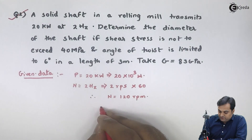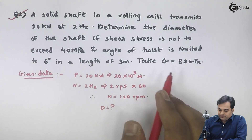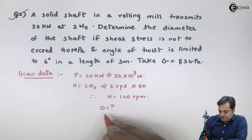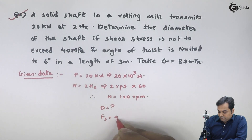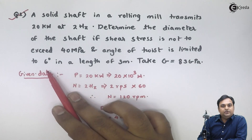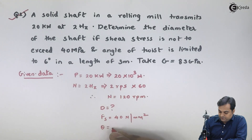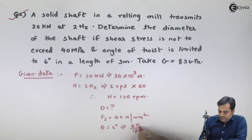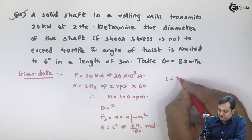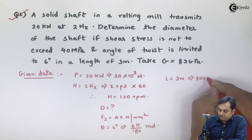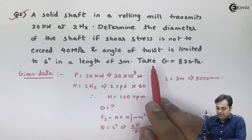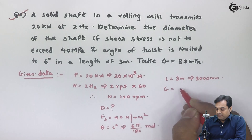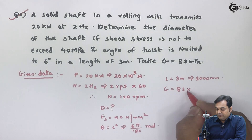We have to calculate the diameter. Shear stress fs is not to exceed 40 megapascal, that is 40 Newton per mm². Angle of twist theta is 6 degrees, converted to radians by multiplying by pi and dividing by 180. The length of the shaft is 3 meters, which is 3000 mm.